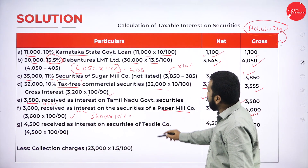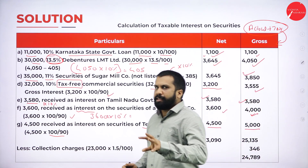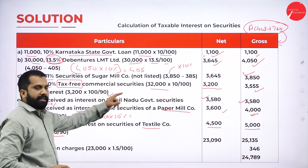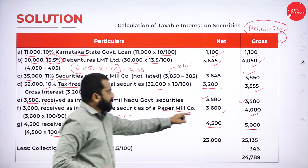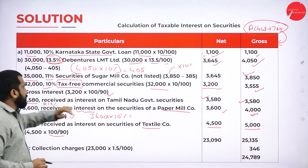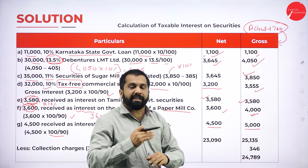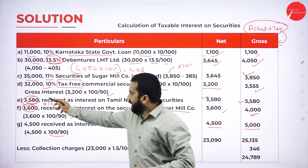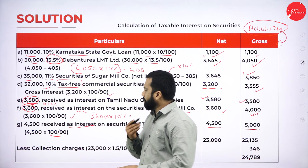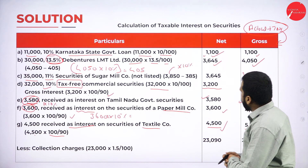Then rupees 4,500 received as interest on security of Textile Company, listed. For gross: 4,500 × 100/90 = 5,000. Net is 4,500. The key point: for items where the principal amount and rate are given (like 32,000 × 10%), we calculate interest. But for items where interest is directly stated as 'received,' we take that amount directly without calculating a percentage again.